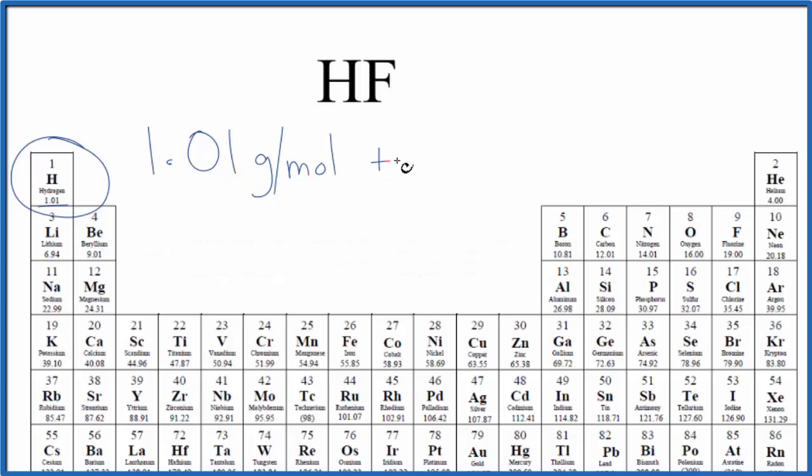Then we add to that the fluorine. We only have one fluorine atom as well. That's 19.00. The units are grams per mole.